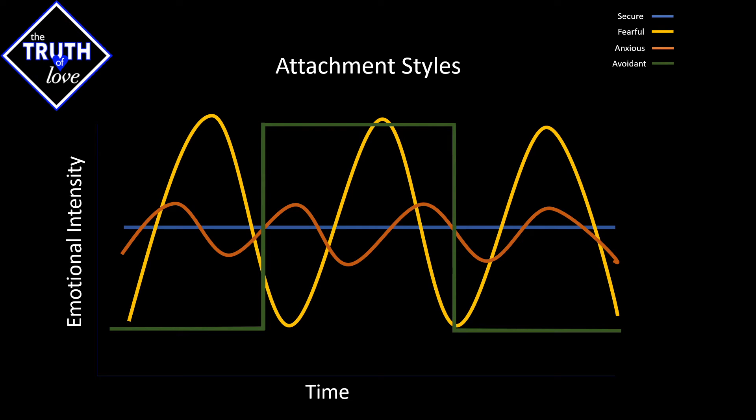Last but not least is the dismissive avoidance, which as you can see tend to be very linear. Unlike the other attachment styles, they tend to be very strict in their regiment. Usually these jumps in either being highly emotional or highly depressed tend to be sparked from some kind of trigger. What that trigger is happens to vary.